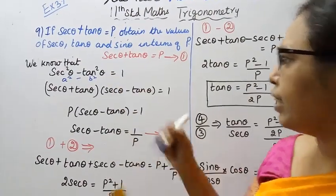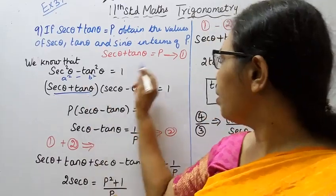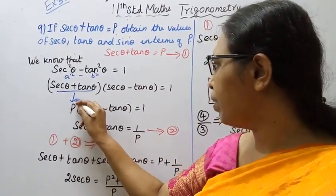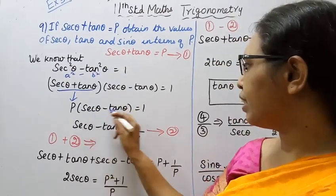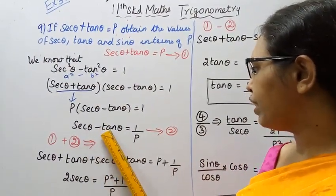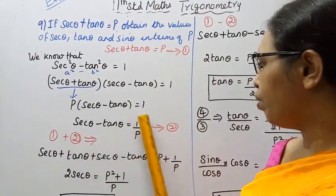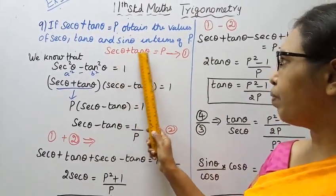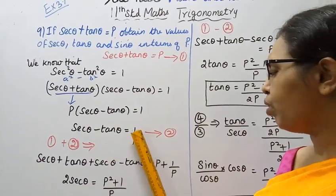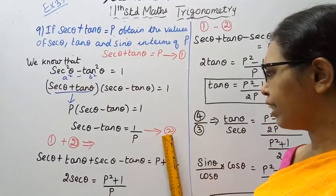Now, sec θ plus tan θ equals p, so we can substitute p here. So p times (sec θ minus tan θ) equals 1. Therefore, sec θ minus tan θ equals 1 by p. So sec θ plus tan θ equals p, and sec θ minus tan θ equals 1 by p.